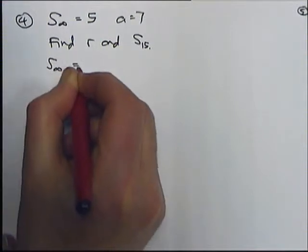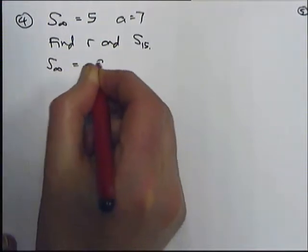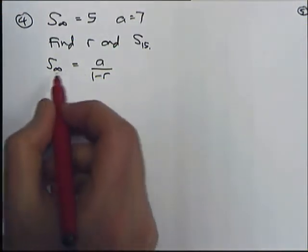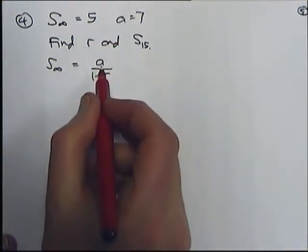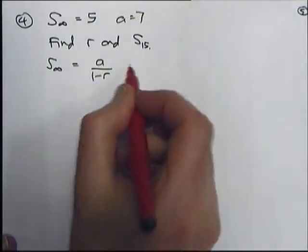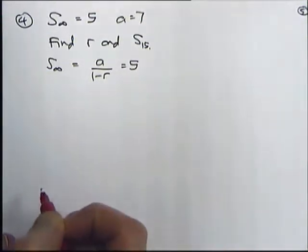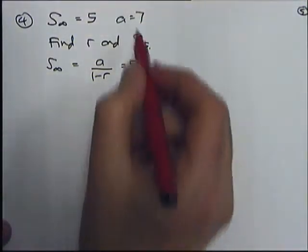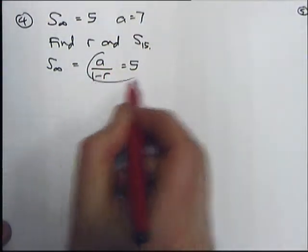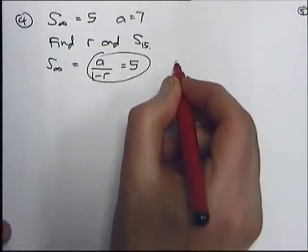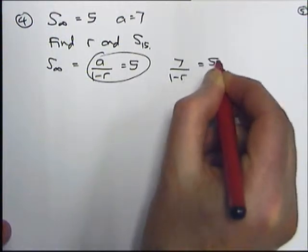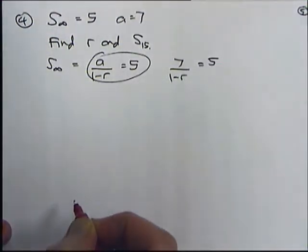The sum to infinity — we have a formula for that — is a over 1 minus r. So if we're told the sum to infinity is 5, that means a over 1 minus r equals 5. But we're also told in this question that a is 7, so that becomes 7 over 1 minus r equals 5.